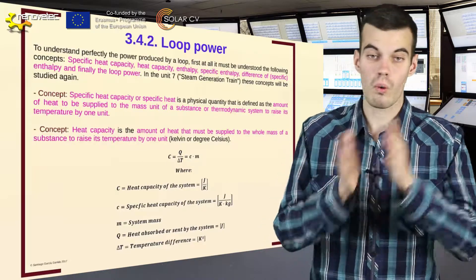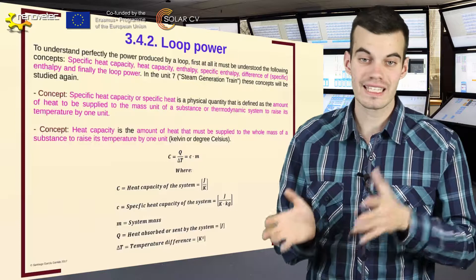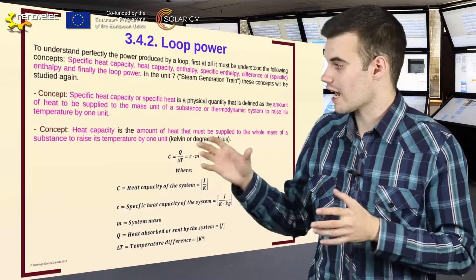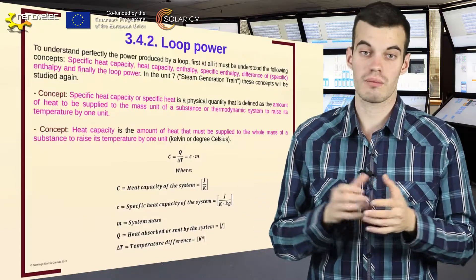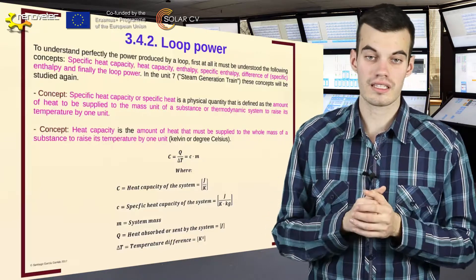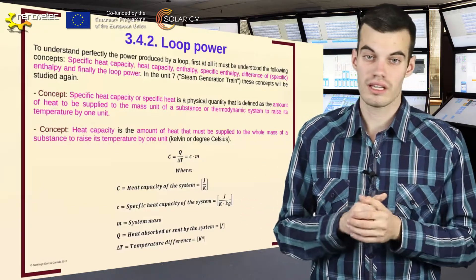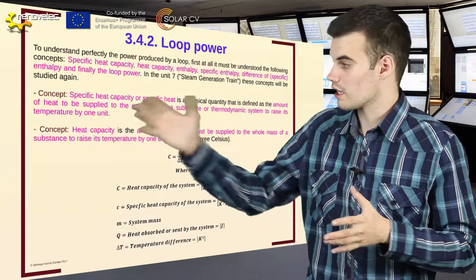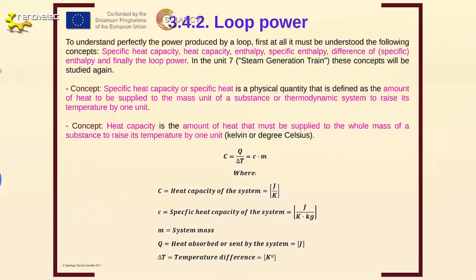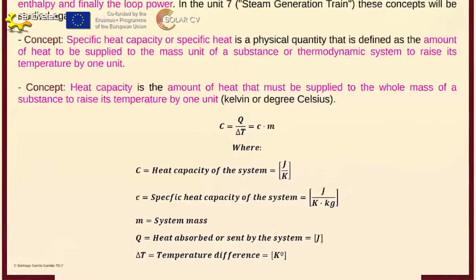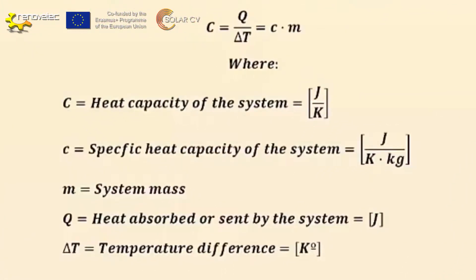On the other hand, we have heat capacity, not specific heat capacity, and this is the total amount of heat that must be supplied to the total substance. For example, if a substance has a mass of 9 kilograms, not only 1 kilogram, it is going to be defined as heat capacity and not specific heat capacity. The formula of heat capacity is the heat absorbed or sent by a thermodynamic system divided by the difference of temperature, or equivalently, it is equal to specific heat capacity multiplied by the mass of the substance.